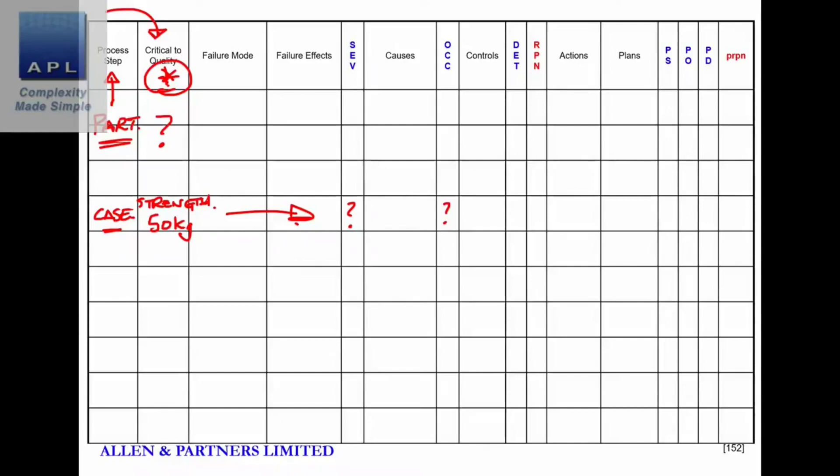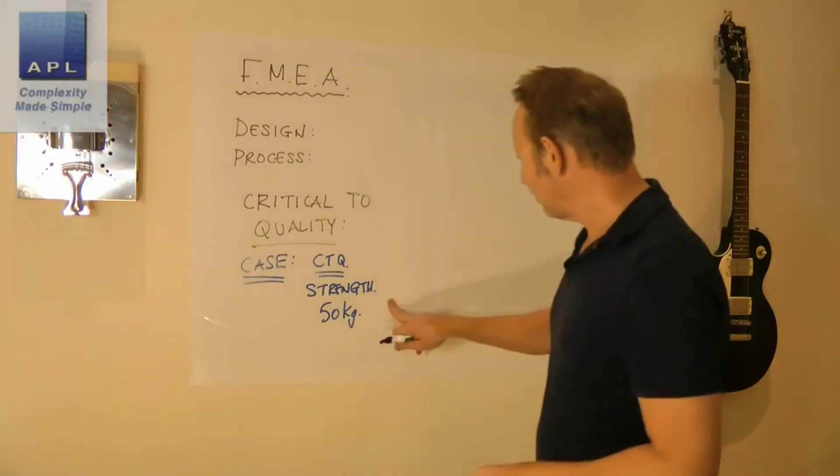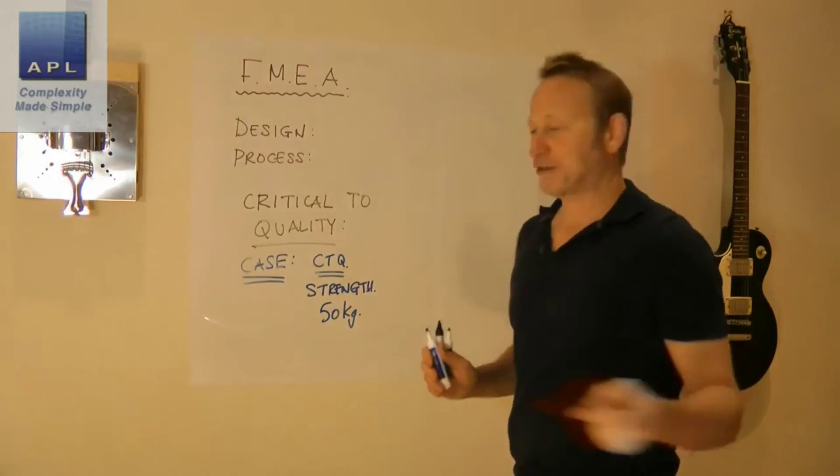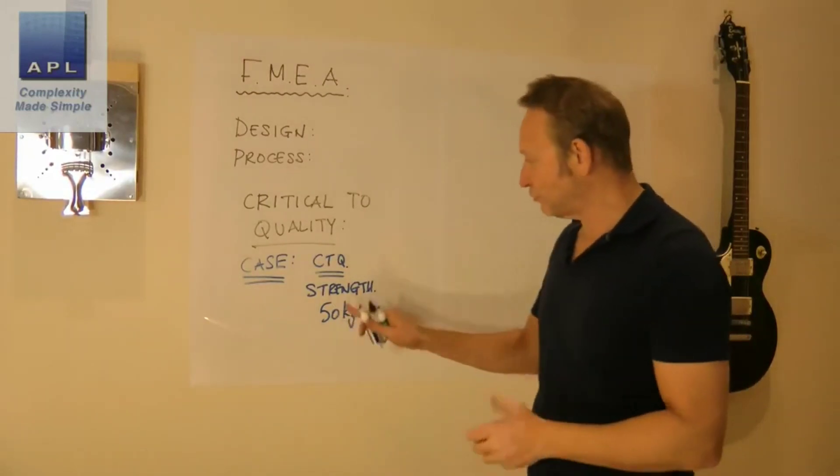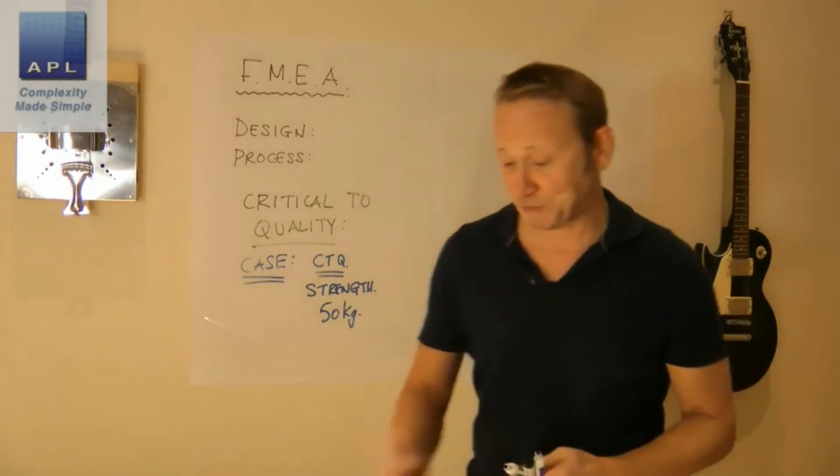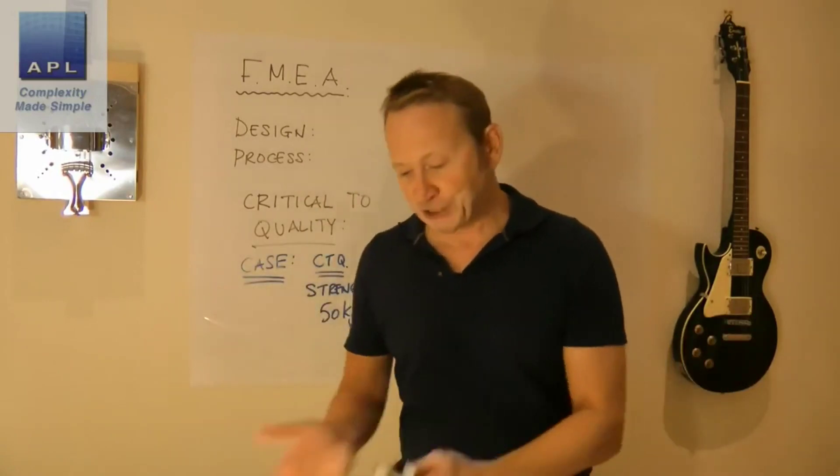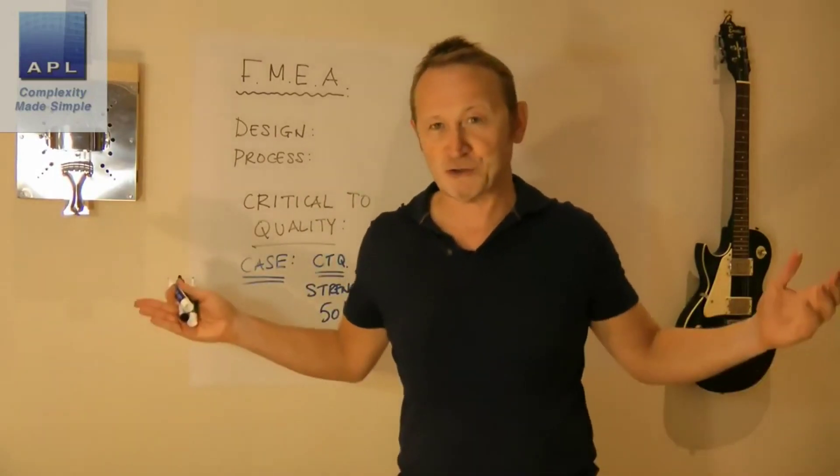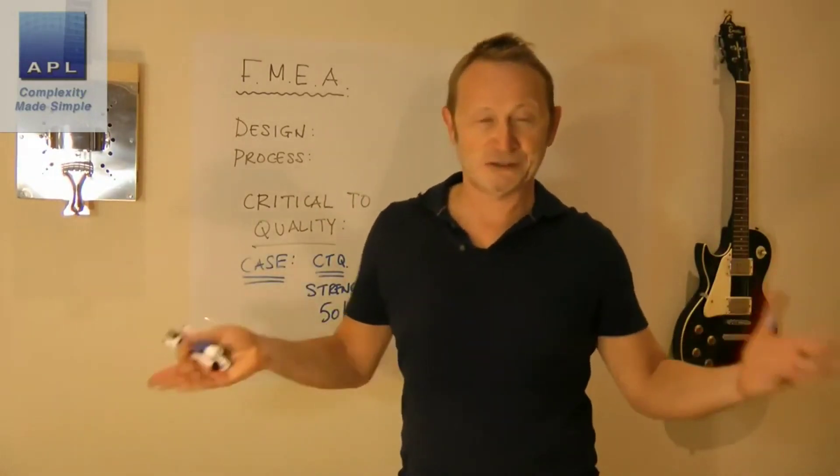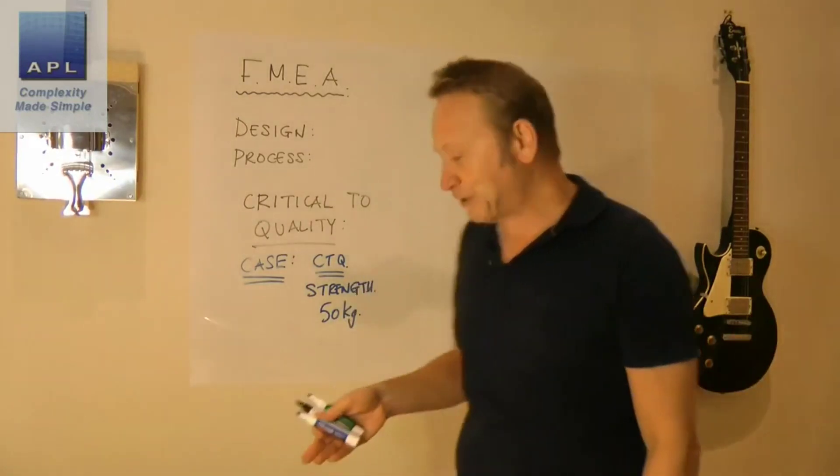And then of course at the end you're going to say, okay, given that I do want to sort this out, what control am I going to put in place? So let's say we decide through the FMEA this is important. We've got to do this. This is Critical to Quality. It's important to the customer because if you sit on it and destroy the remote control, remote controls are not usable. You're not going to have a happy customer.